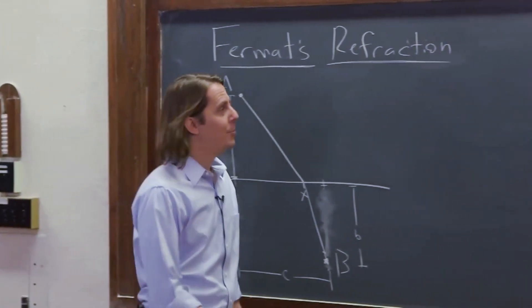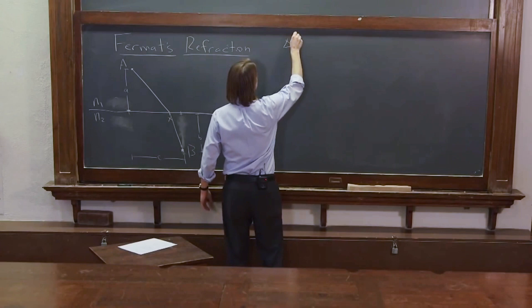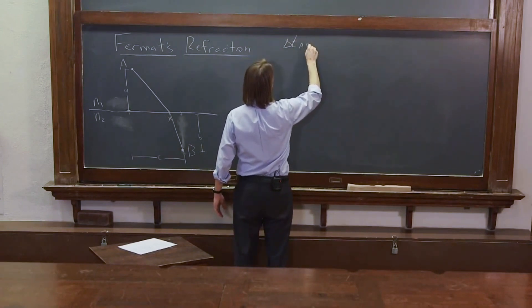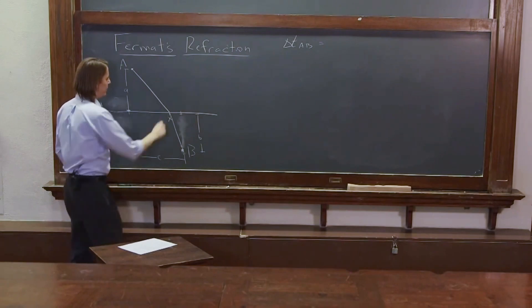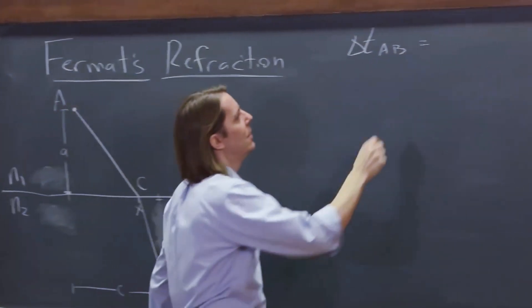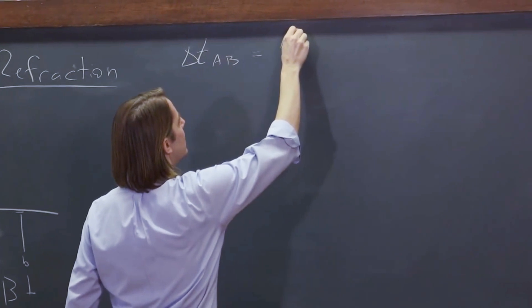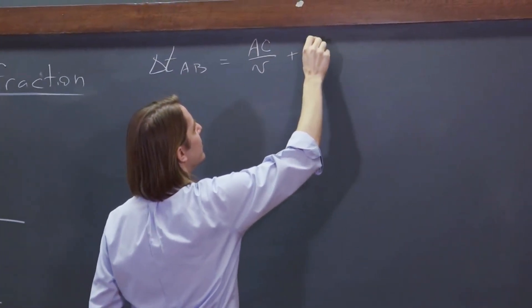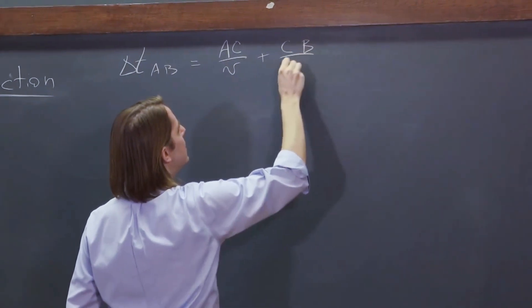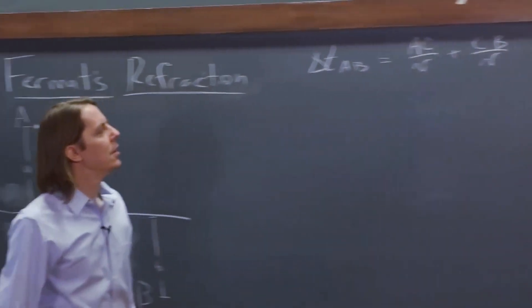So it actually sets up very much the same. We want to know what is delta T from A to B. Well, we divide it into these two chunks. So we call this point C, and we say, well, it's just the distance A to C over the speed plus the distance C to B over the speed of the wave.